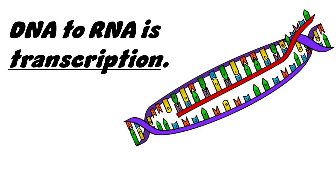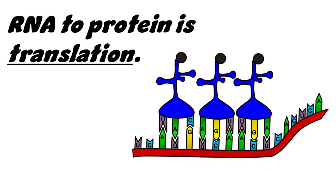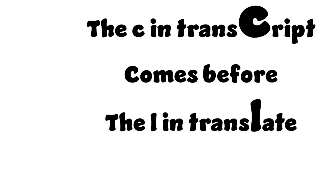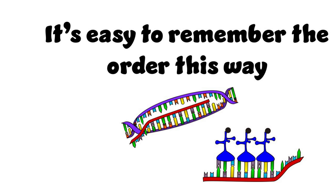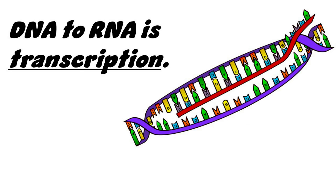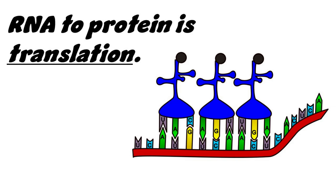DNA to RNA is transcription. RNA to protein is translation. See a trust field comes in for the L to translate — it says it'll remember the order this way.